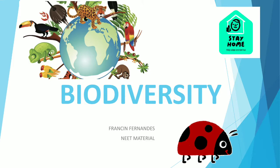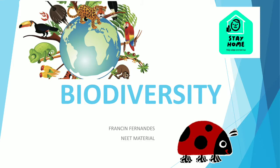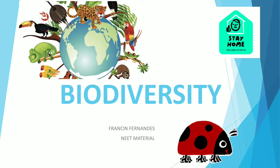In the tropical rainforest called the Amazon rainforest, located in South America, there are 40,000 species of plants, 3,000 species of fish, 1,300 species of birds, 427 mammals, 427 amphibians, 378 reptiles, and more than 1,25,000 invertebrates. Scientists have estimated these numbers, though they may not be exact.